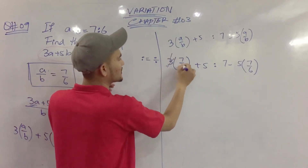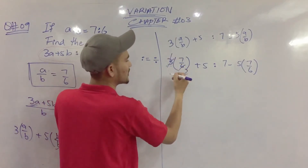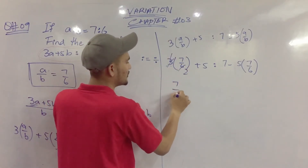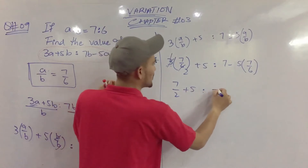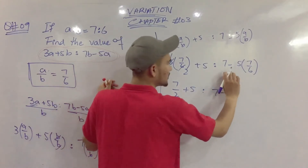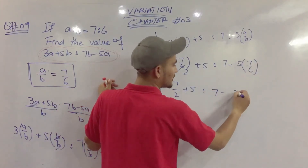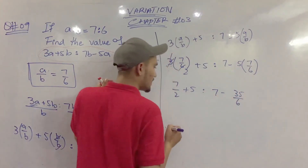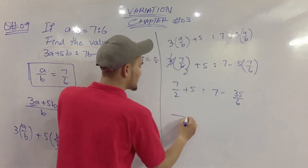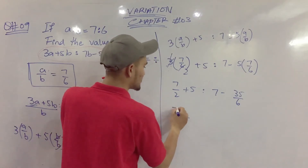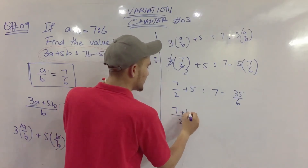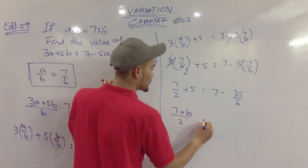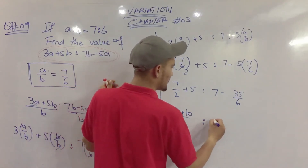So we have 7 divided by 2 plus 5, ratio 7 minus 35 divided by 6. This simplifies to 7 plus 10 over 2 in the numerator part.